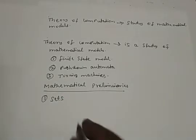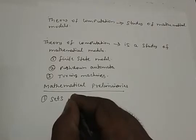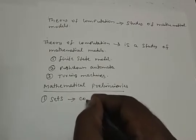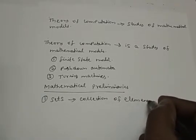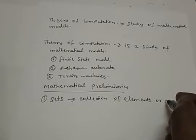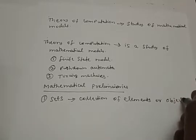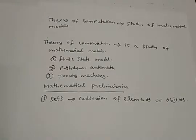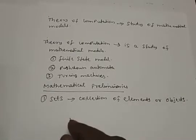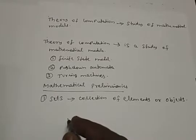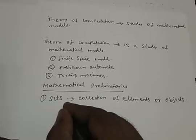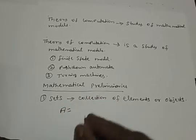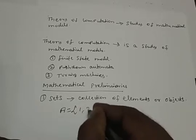Sets are actually a collection of elements — it is also called a collection of objects. To represent a set, let us assume we have a set named A. A = {1, 2, 3}. We can say that A is a set which consists of three elements: 1, 2, and 3.